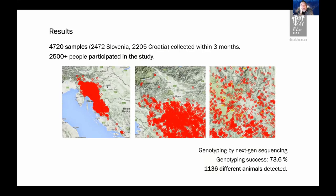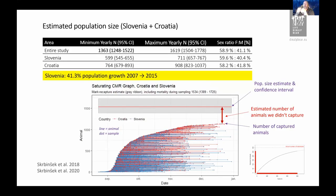The results were good. Within three months we managed to collect close to 5,000 samples from an estimated 2,500 or more participants. We used genotyping by next-generation sequencing to analyze the samples and detected 1,136 different animals. We then applied mark-recapture modeling to estimate the total population size using different modeling approaches, getting nearly the same results. For Slovenia, this was the second study — we did the first in 2007 and saw 41.3% population growth.